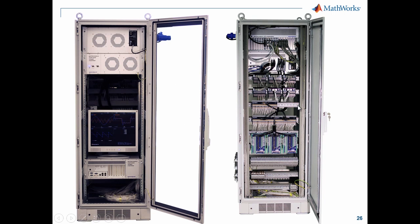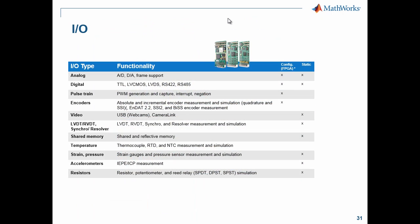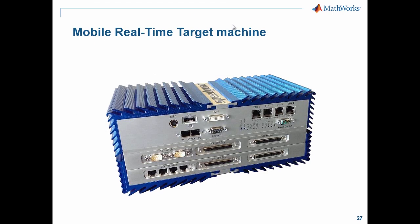Here's a system recently delivered to a customer — a hardware-in-the-loop system for an automated ground vehicle used in farming. This shows what a real industrial-strength system can look like. This is a picture of the latest mobile real-time target machine — somewhat hardened for in-vehicle, aircraft, or ground vehicle use, vibration-proof, and can be expanded with additional layers. With two layers it can have six IO modules with many channels each.